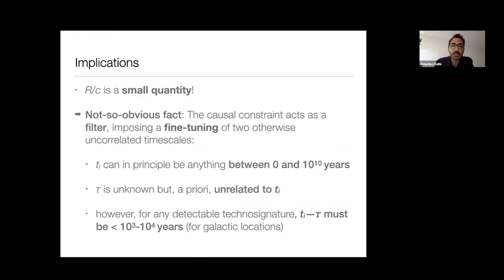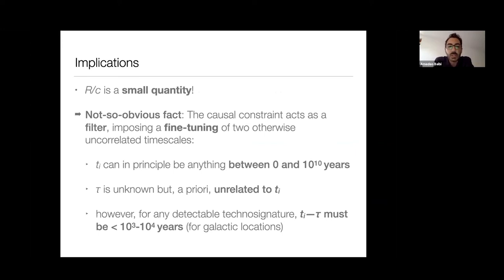Where is the interesting implication? R over C in general is a small quantity. If R is a location in our galaxy, R over C is a small timescale — the galaxy is very small compared to the distance that light can travel over timescales typical of the age of the galaxy. This means the causal constraint acts as a filter on all the technosignatures we can detect, selecting only those with a very strict fine-tuning between two timescales that are otherwise uncorrelated.